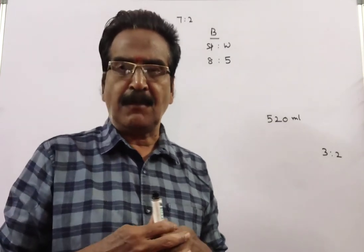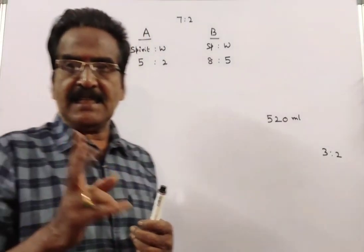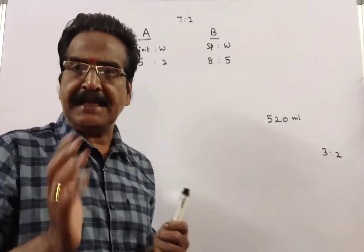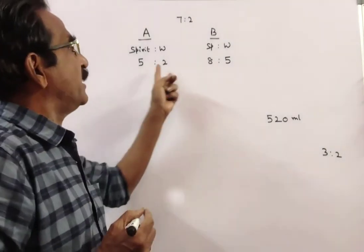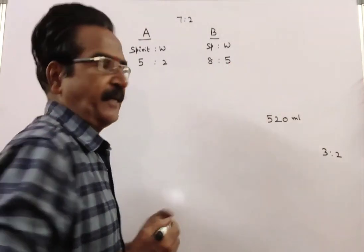Friends, problem is given in the description box. Two vessels A and B contain spirit and water in the ratio 5 is to 2 and 8 is to 5.